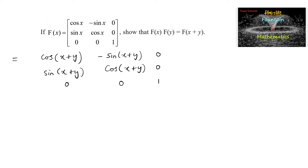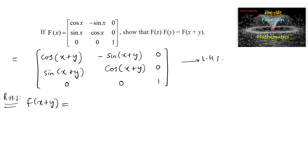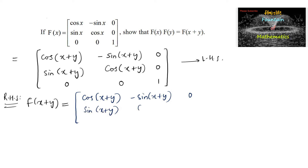And again zero, zero, and one. So the result is the matrix: cos(x+y), negative sin(x+y), 0; sin(x+y), cos(x+y), 0; 0, 0, 1. This is the left hand side. Now f of x plus y, by substituting x plus y in place of x, gives cos(x+y), negative sin(x+y), 0; sin(x+y), cos(x+y), 0; 0, 0, 1. The left hand side and right hand side are equal.